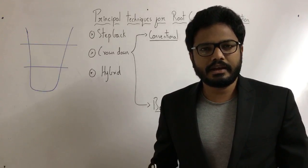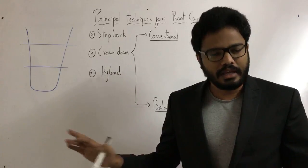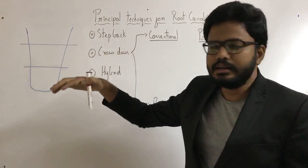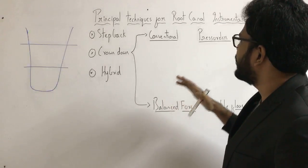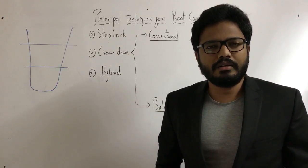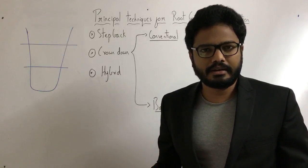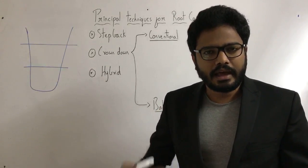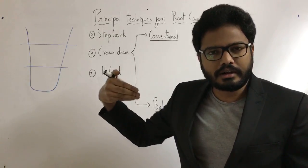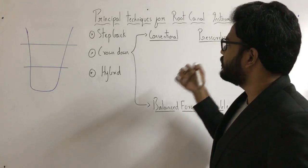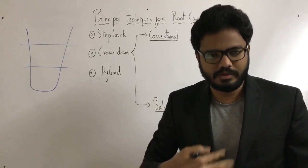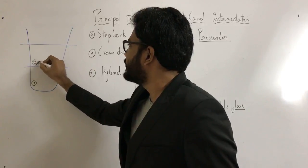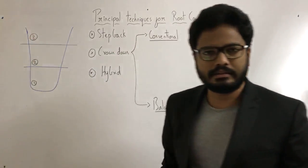The first 15-20 minutes I'll take to summarize all the important points in this entire topic, and then we'll go into textbook discussion. As a consideration, we have the apical third, middle third, and coronal third of the root canal. We have different techniques for root canal instrumentation: the step-back technique, crown-down technique, and hybrid technique. Step-back technique means we start from the apical third and then step back or move coronally one mm — depending on the technique — to the middle third and coronal third.